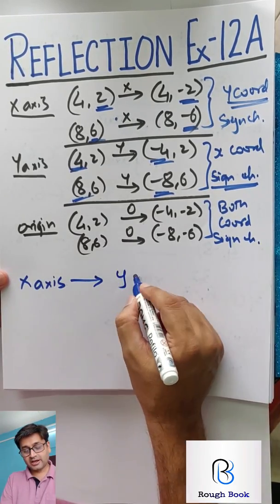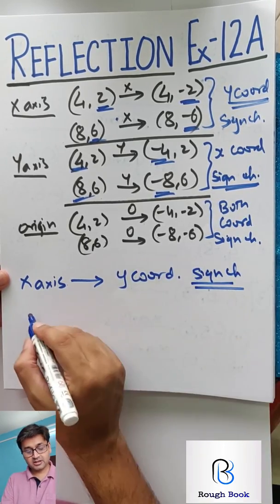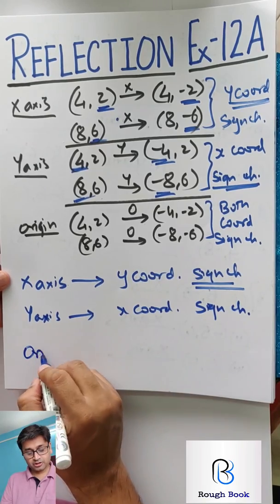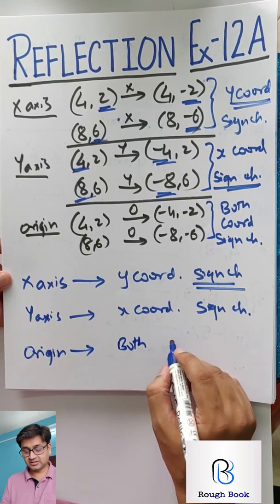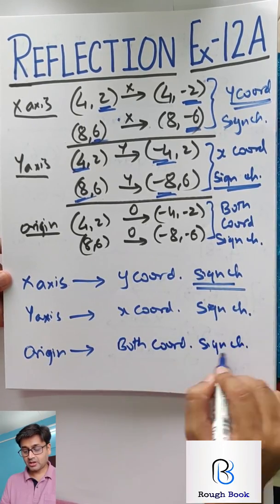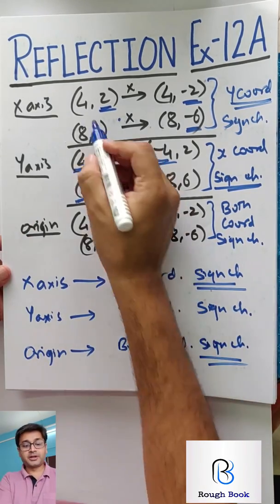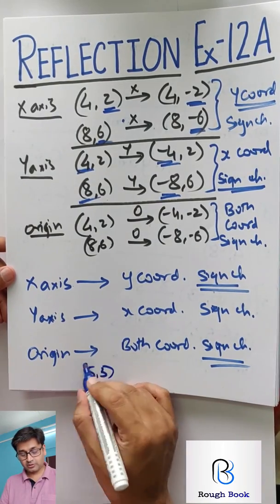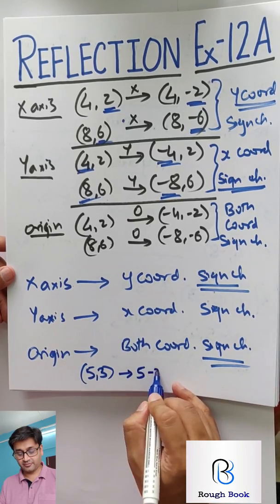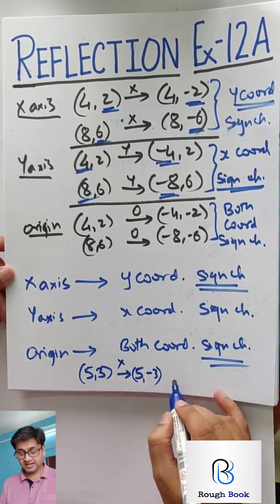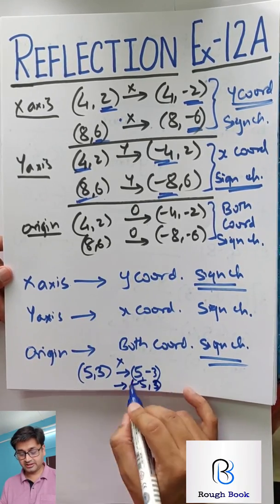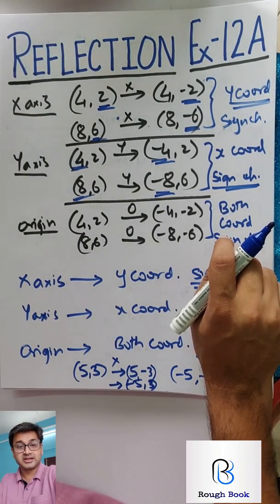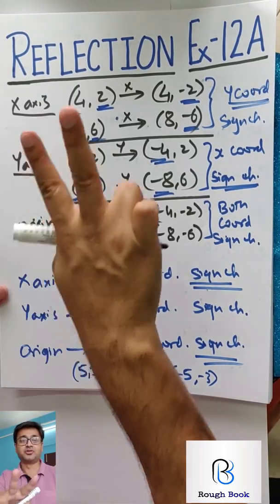So the table goes this way: x-axis, y-coordinate changes the sign. Y-axis, x-coordinate changes the sign. And when it is in origin, both the coordinates' sign changes. So do you need graph if I ask you a particular point reflecting in x, y or origin? Let's test. If I am reflecting 5 by 3 in x-axis, obviously y will change, so it will become 5 minus 3. Same reflected in y, minus 5 by 3. Same reflected in origin, minus 5 by minus 3.